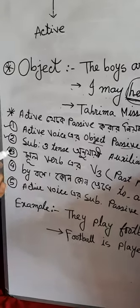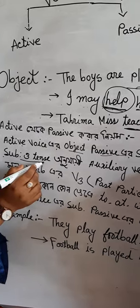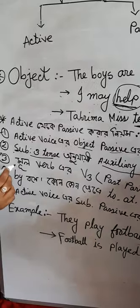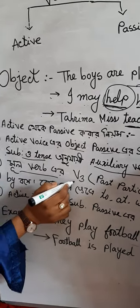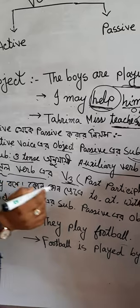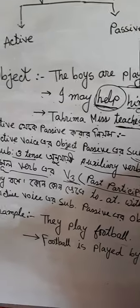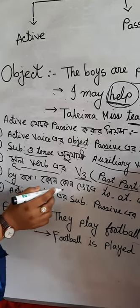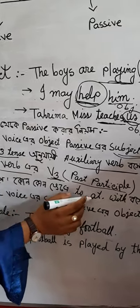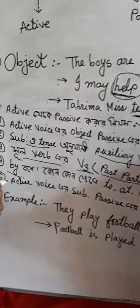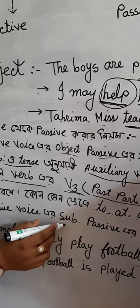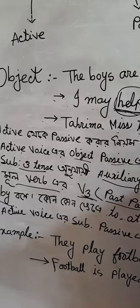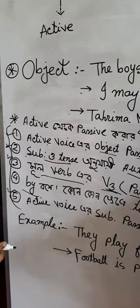The tense and number of the new subject must be followed. The auxiliary verb changes according to the subject, and the main verb must be used in its past participle form. These are the basic rules for converting active voice to passive voice.